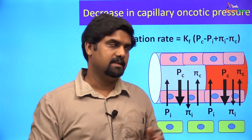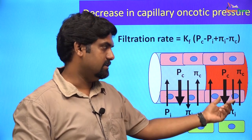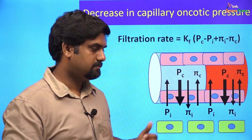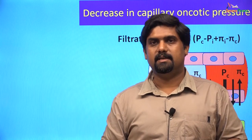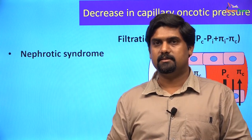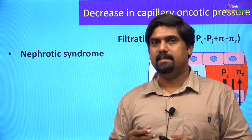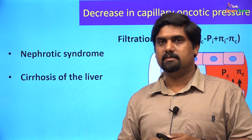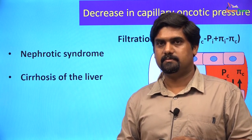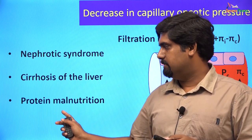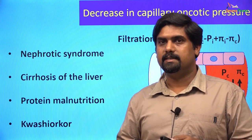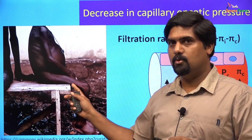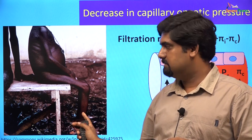Another important cause for extracellular edema is a decrease in the capillary oncotic pressure. This will lead to excess filtration at the arterial end and decreased reabsorption at the venous end, leading to extracellular edema. Such edema happens in conditions that decrease plasma protein concentrations, like in nephrotic syndrome where there is protein filtration happening in the kidney and these proteins get lost in the urine. Plasma proteins are also decreased in cirrhosis of the liver, which leads to decreased production of these proteins. Protein malnutrition like in kwashiorkor can also lead to decrease in plasma protein concentration and thereby cause edema. Here we can see the picture of a child with kwashiorkor, with severe muscle wasting due to the lack of proteins.